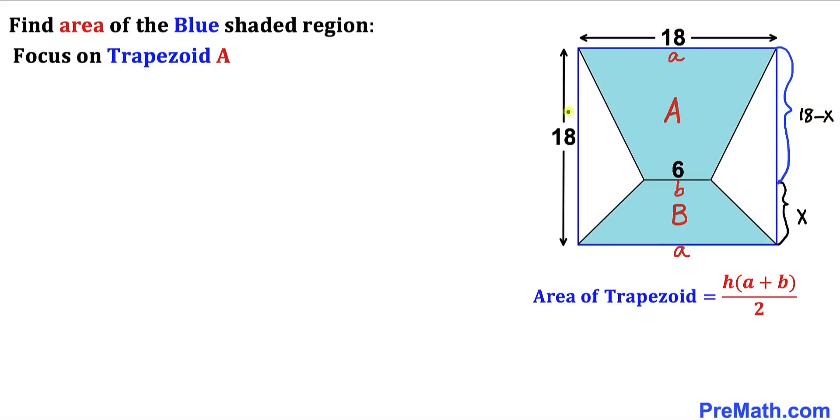And here's our next step. Let's focus on this trapezoid A. And now we are going to calculate the area of this trapezoid A by applying this formula. In our case our height is 18 minus X times (A + B). In our case A is 18 plus B is 6 divided by 2.